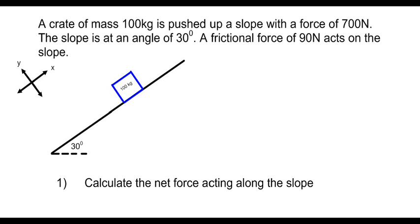So looking at the question, we read: a crate of mass 100 kilograms is pushed up a slope with a force of 700 newtons. The slope is at an angle of 30 degrees. A frictional force of 90 newtons acts on the slope. The question is: calculate the net force acting along the slope.